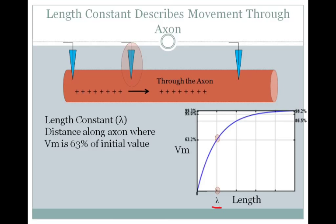So if you injected some current here and caused a 100 millivolt change, at this place — at your lambda length — you'll now be at 63 millivolts different from the start.